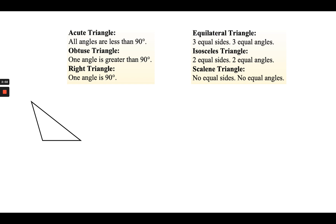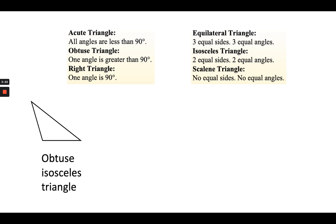I see these two lines that come from my angle here — those are equal. I can use my paper or maybe even a pencil to guesstimate and see if those are equal. Since we know that angle is obtuse and these two sides are the same, this triangle is labeled as an obtuse isosceles triangle.